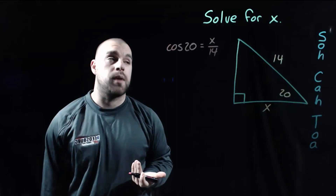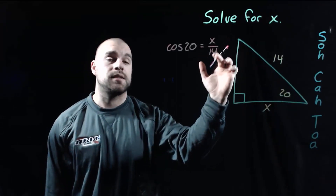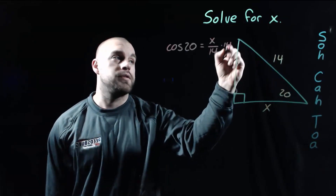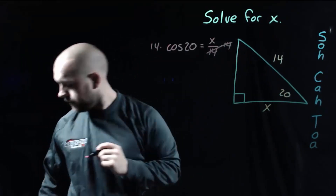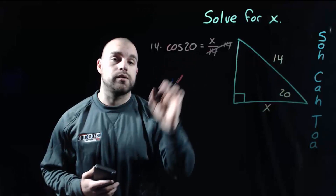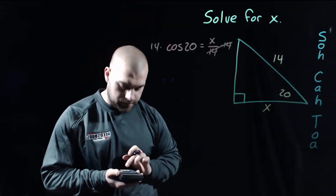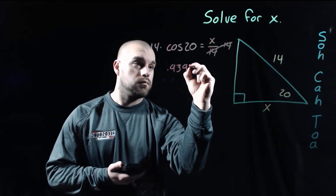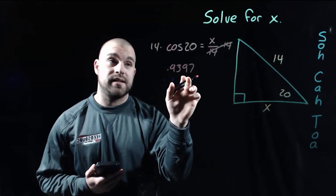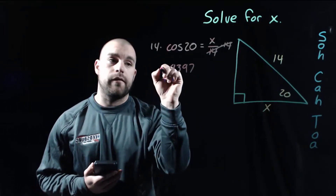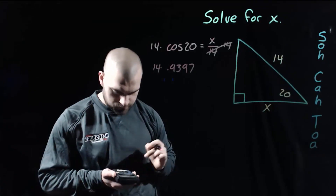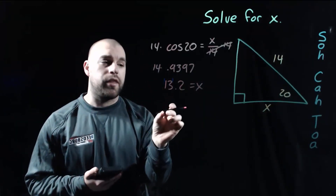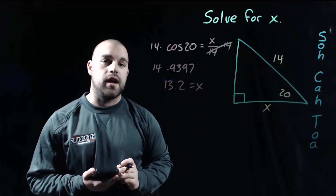Now we need to work on getting X all by itself. We're dividing X by 14, so we multiply both sides by 14. In my calculator, cosine of 20 degrees is 0.9397, but we still have to multiply by the 14 out in front. When I type all of that in, I got about 13.2 as our X value.